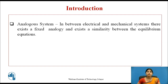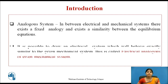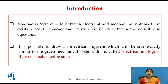We have two different physical systems with the same mathematical model — they will be called analogous systems. Between electrical and mechanical systems, there exists a fixed analogy and a similarity between the equilibrium equations. Due to this, it is possible to draw an electrical system which will behave exactly similar to the given mechanical system. This is called the electrical analogous of a given mechanical system, and vice versa.